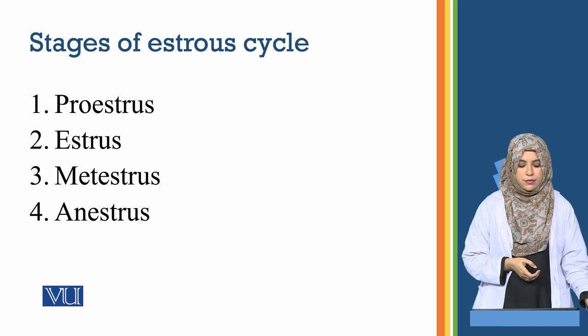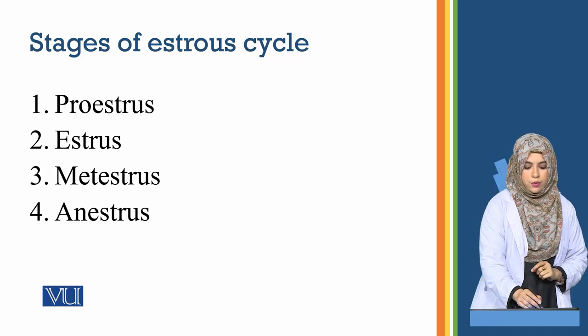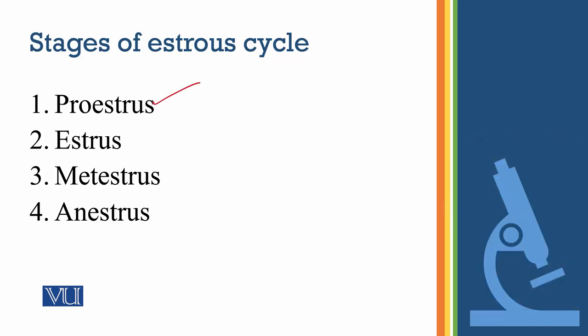First, we will discuss proestrus. Proestrus is the phase we call the follicular phase. Follicles grow, and as they grow, estrogen hormones start to be produced. These estrogen hormones act on the uterus, specifically on the endometrium, which is the uterine lining, promoting its development.